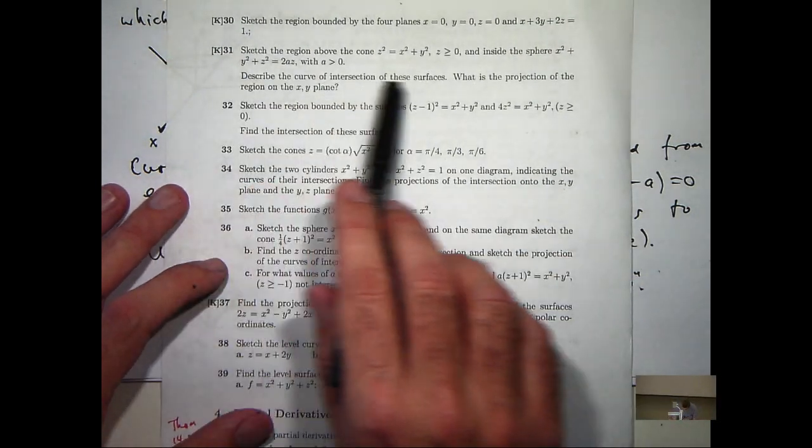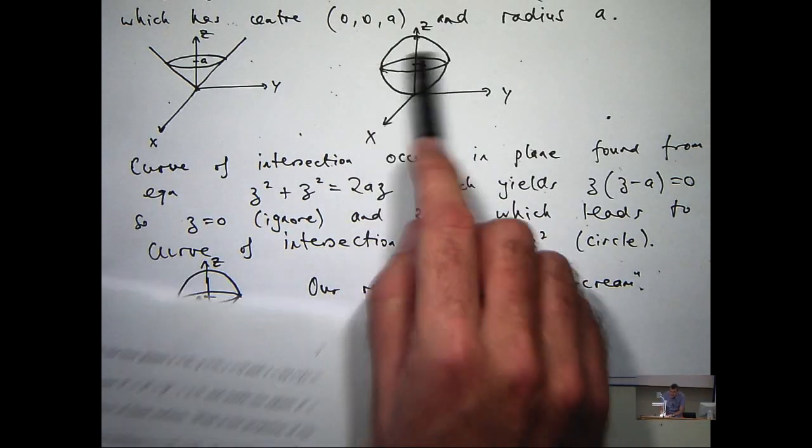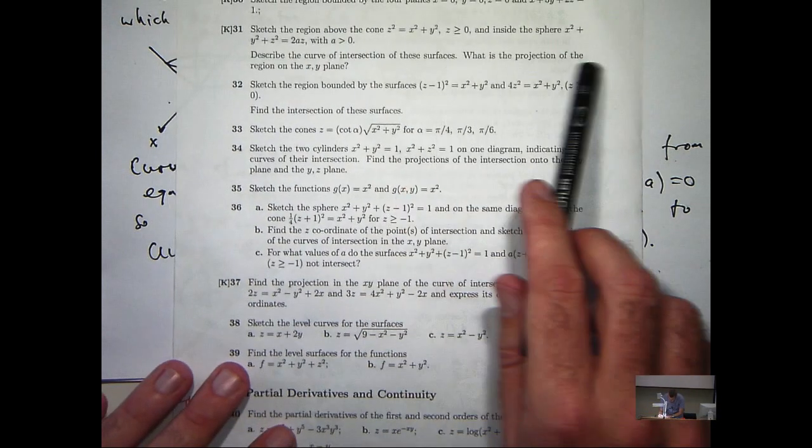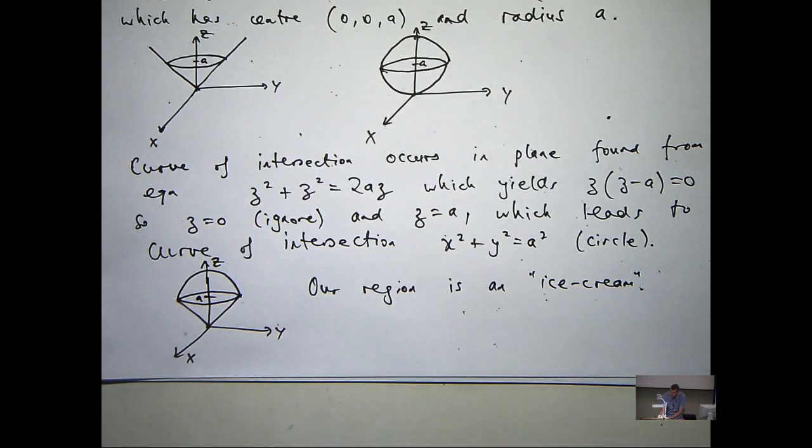So let's have a look at the second. Describe the curve of intersection. We've already done that. It's this circle here. What is the projection of the region into the xy plane? Now I'm not sure if I mention this in lectures, so I'm going to mention it now. Anybody want to... actually, before I get to that, what do you think the projection of a region in the xy plane would... what do you think it might be?